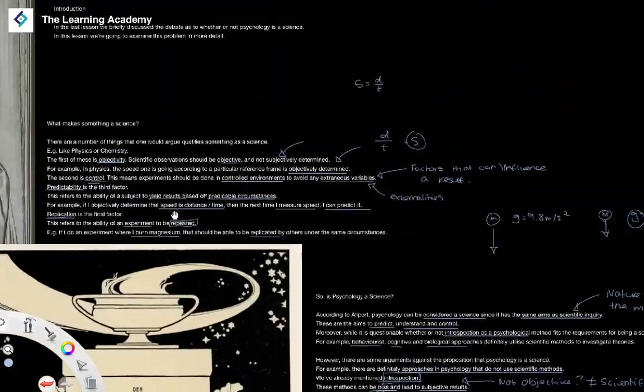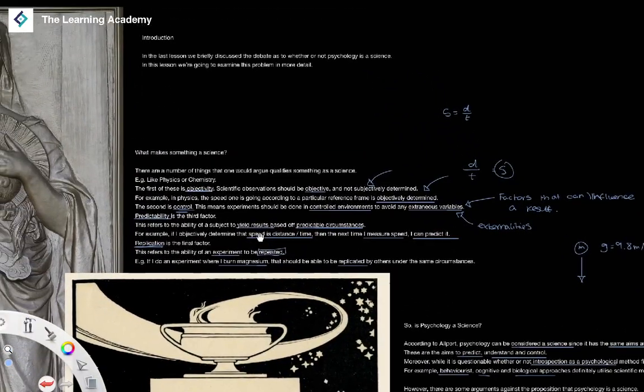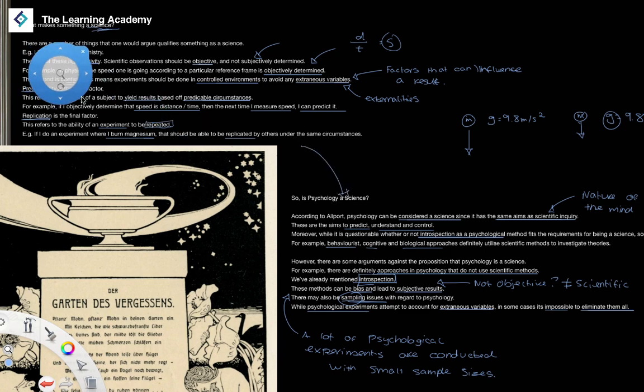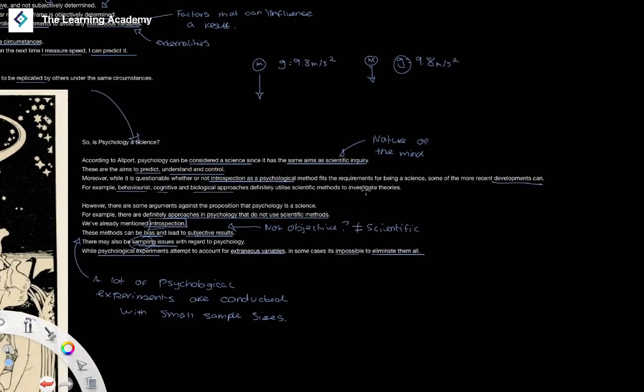So when it comes to the debate around whether psychology is a science, you should always note that in order to answer this question, we have to first argue and come to a number of conclusions about what actually is a science, what things are required for one to argue that something is a science, before turning to applying those criteria to psychology.